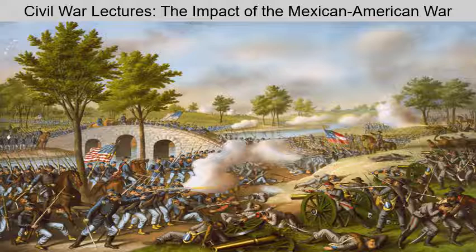The Wilmot Proviso stirred passions on both sides in Congress, and the issue of slavery's expansion divided the country along sectional lines once again. Many moderates were looking for a solution to throw water on this fire over the new territory. Senator Lewis Cass of Michigan proposed that the citizens of each new territory would be allowed to decide for themselves whether to permit slavery — a concept that became known as popular sovereignty.